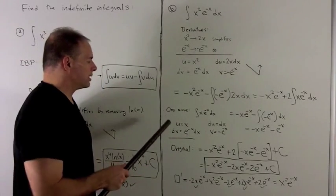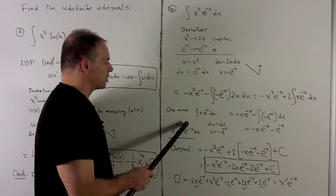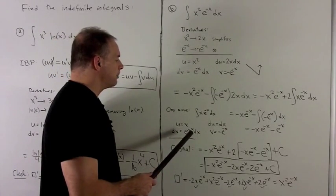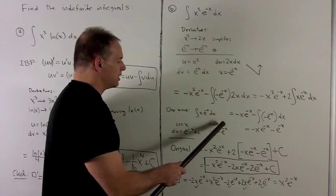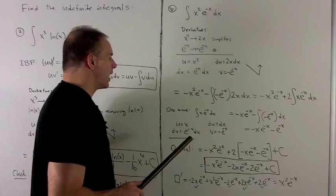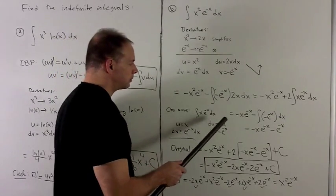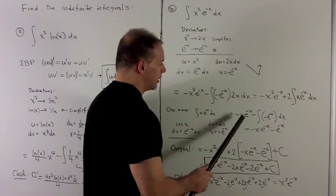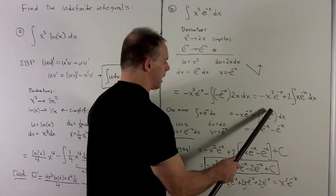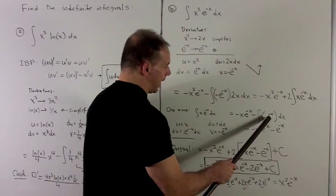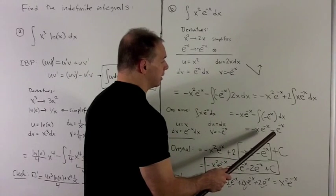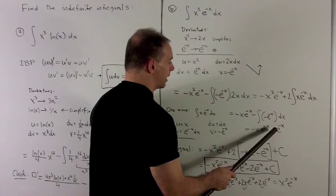We need to integrate x e to the minus x, so we do integration by parts again. Letting u equal x sends du to dx, and we let dv equal e to the minus x dx, so v equals minus e to the minus x. Going down the diagonal: x times minus e to the minus x. Integrating up: minus the integral of minus e to the minus x dx. Crushing the minus signs and taking the antiderivative of e to the minus x picks up another minus sign, leaving minus x e to the minus x minus e to the minus x.